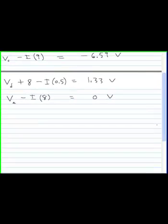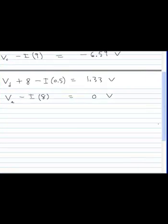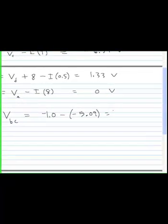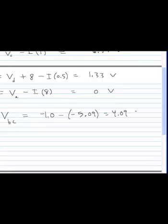Okay. In this problem, they're asking for the terminal voltage across the 4 volt battery. So they're looking for delta V between points B and C. And so I end up getting minus 1 minus a negative 5.09, which is 4.09 volts.